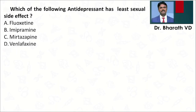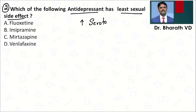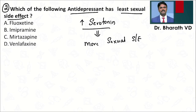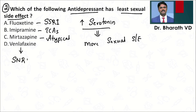Second question: which of the following antidepressants has the least sexual side effect? Remember, the more serotonin is increased in the brain, the more the sexual side effect. Fluoxetine is an SSRI, imipramine is a TCA, and mirtazapine is an atypical antidepressant, while venlafaxine is an SNRI. SSRIs, TCAs, and SNRIs all increase serotonin levels and can all cause sexual dysfunction — maximum with SSRIs.